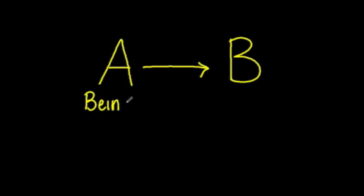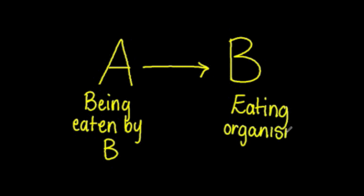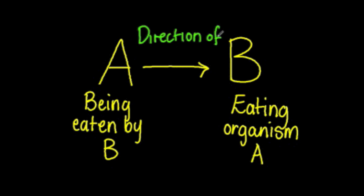A food chain shows organisms and the direction of energy flow between them. Here we have organism A and organism B. Organism A is being eaten and organism B is eating organism A. The arrow from A to B indicates that the energy is flowing from organism A to organism B.